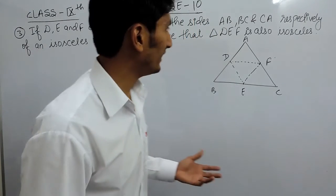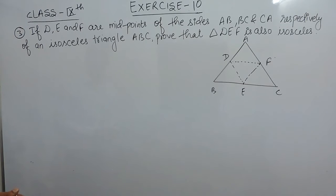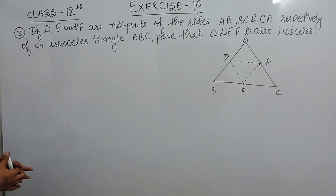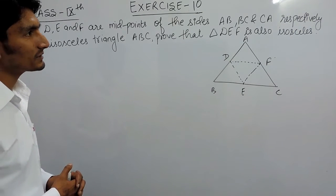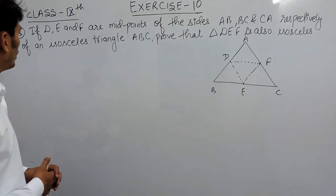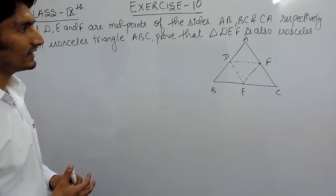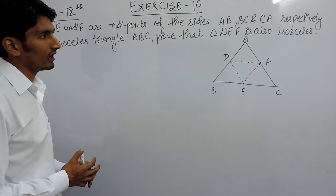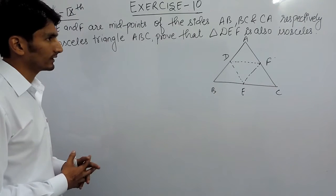Hello everyone. In this video we are going to solve question number 3. In this it is given that D, E, F are the midpoints of the sides AB, BC and CA respectively of an isosceles triangle ABC, and you have to prove that triangle DEF is also an isosceles triangle.